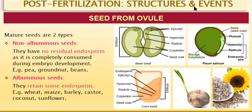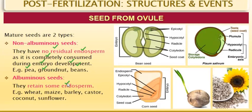Mature seeds are of two types. Non-albuminous seeds have no residual endosperm — the embryo has consumed it completely during development. Examples include pea, groundnut, and beans. Albuminous seeds retain some endosperm even after seed development. Examples include wheat, maize, barley, castor, coconut, and sunflower.